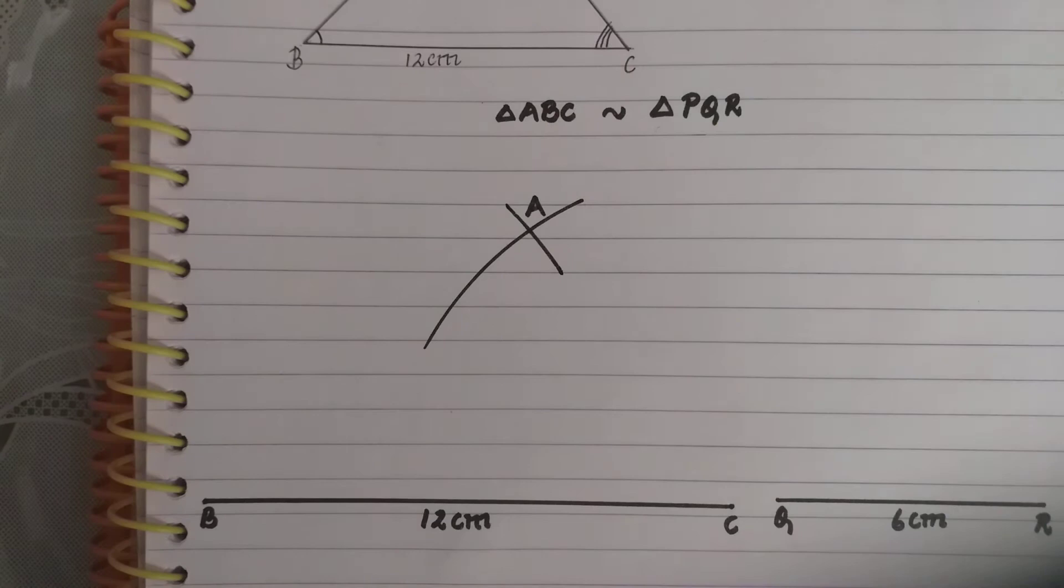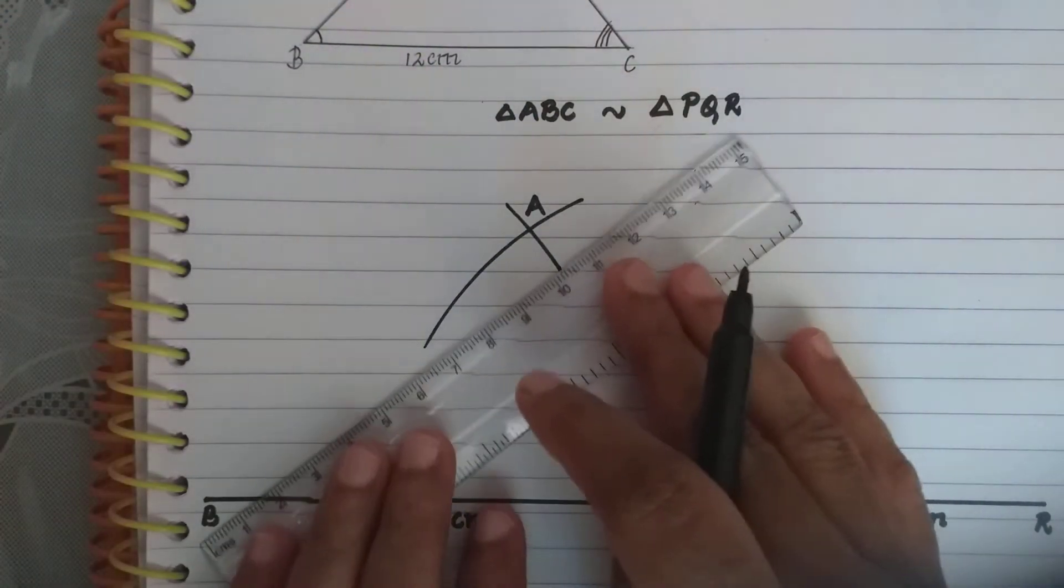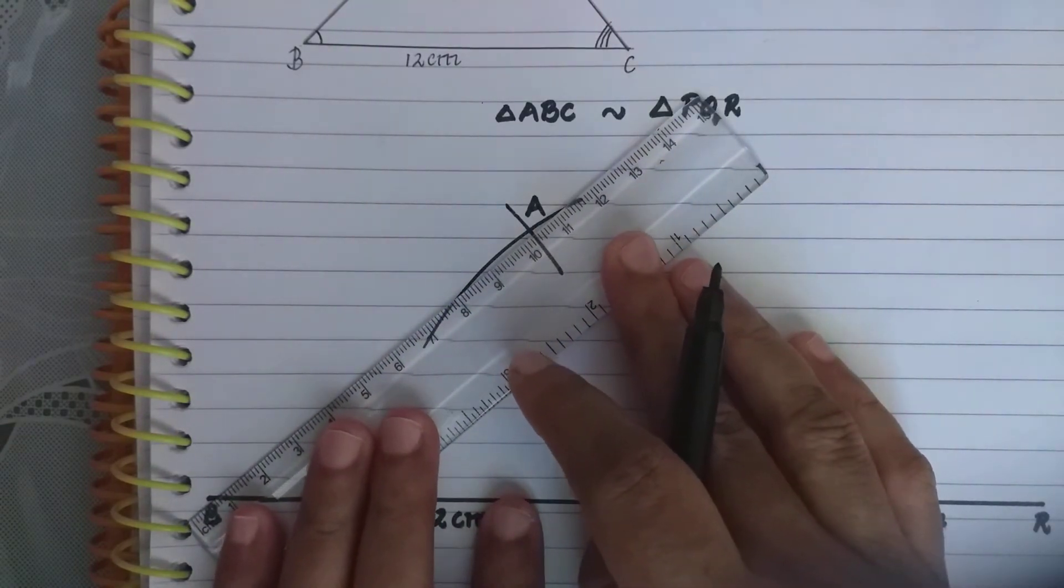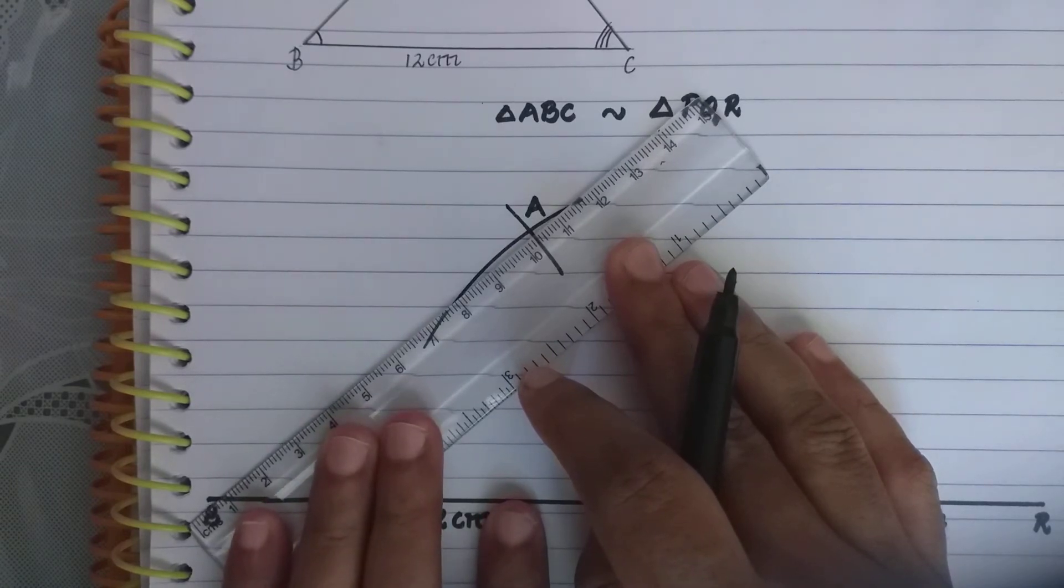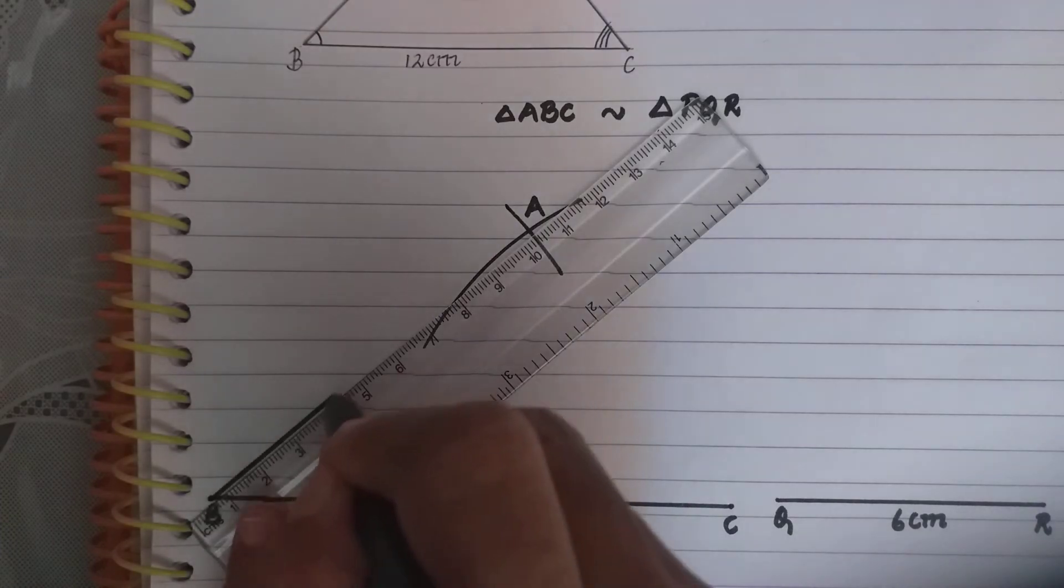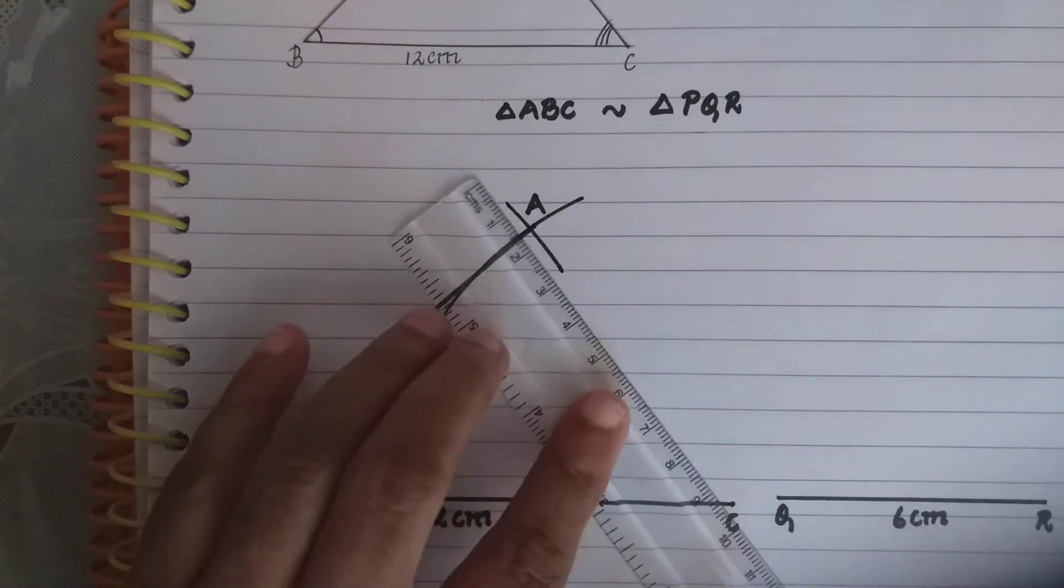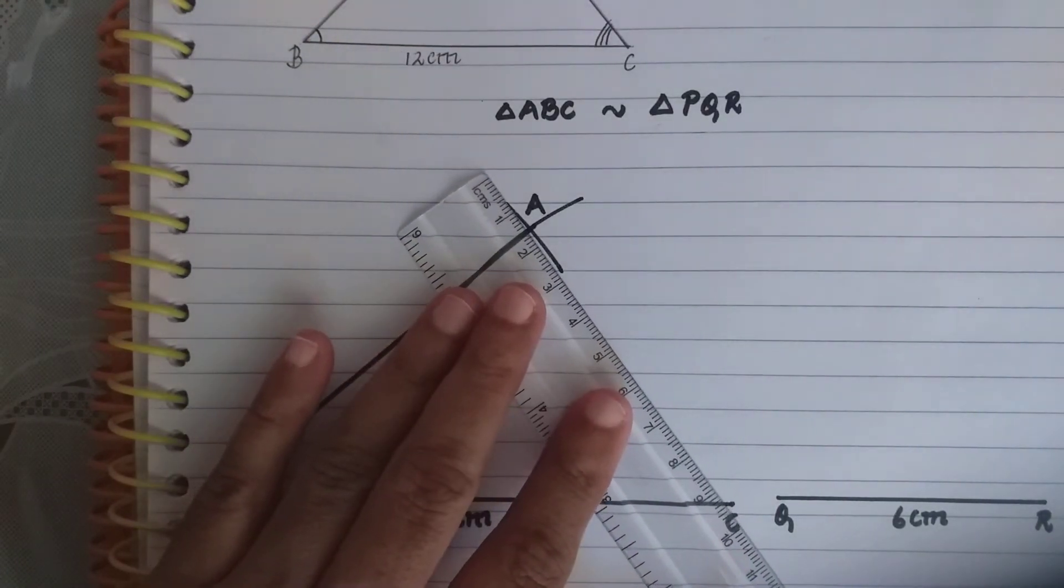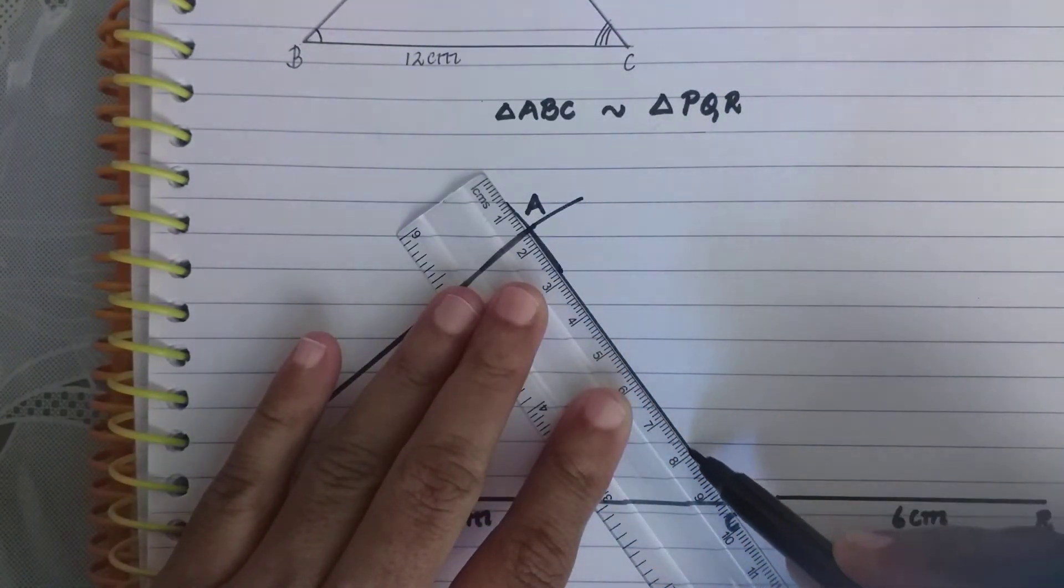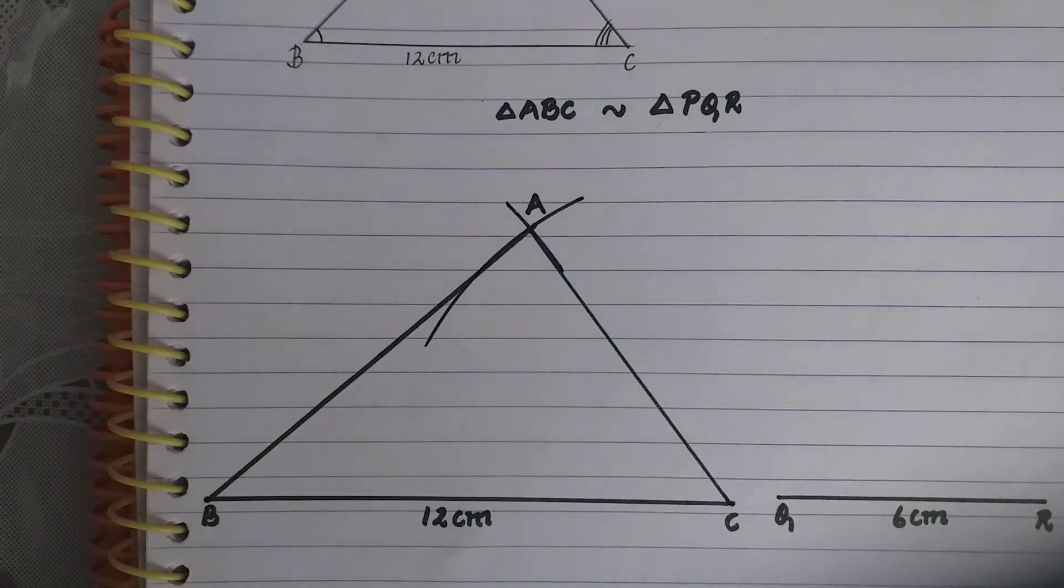So now I will join A to B and A to C. So I have the first triangle.